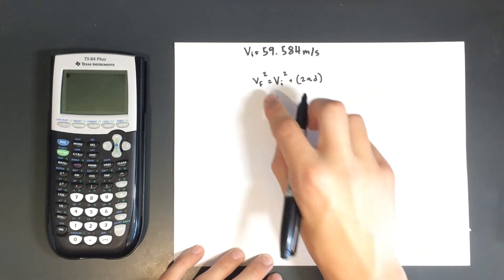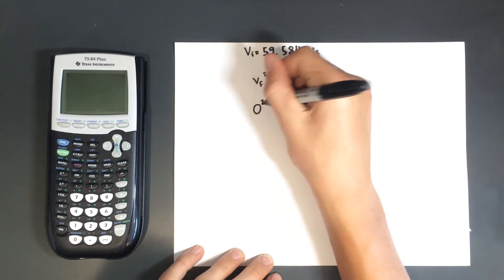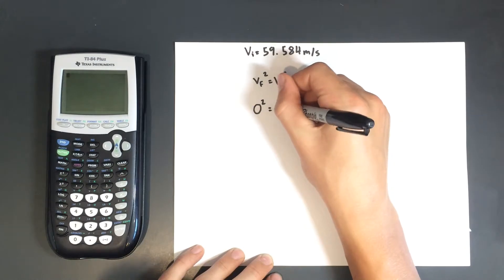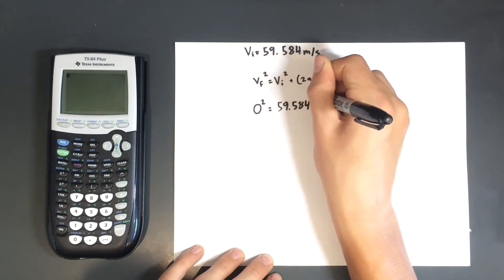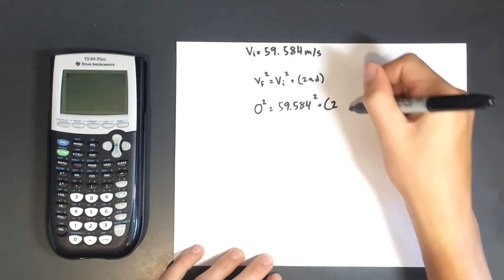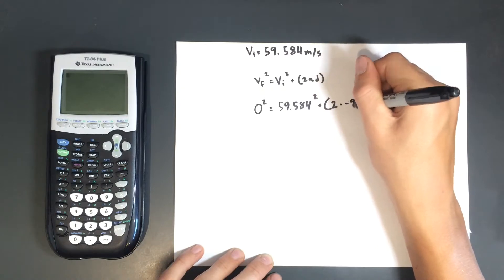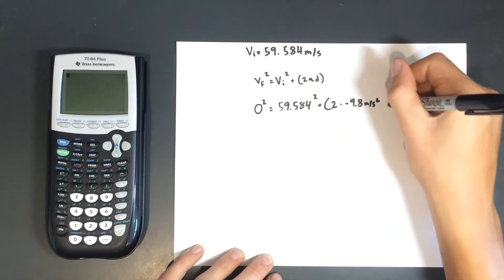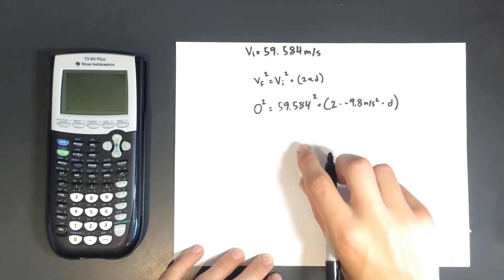So let's fill in what we know. Final velocity is 0, as discussed earlier. Initial velocity is 59.584, so that's squared, plus 2 times negative 9.8 meters per second squared times d, where d is the height we're solving for.